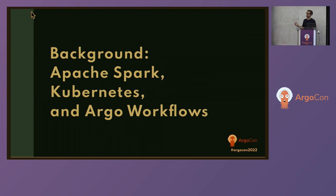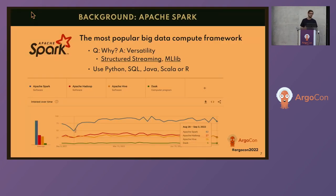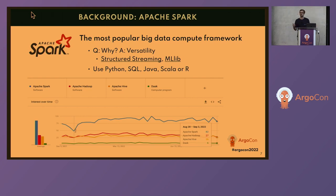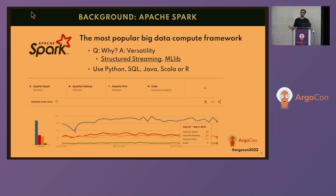Let's get into the background of the tools we're using. First, Apache Spark — it's a really popular big data compute framework that's open source. In addition to being super performant for batch data jobs, it's a really versatile tool, which is why it's maintained its popularity over time, even with upstarts like Dask and Ray coming onto the scene. Spark remains relevant because it's versatile — you can use the framework to run streaming jobs alongside your batch jobs. It also has a machine learning library named MLlib, so you can transition right from ingestion and data processing into machine learning, and do that with a bunch of common languages.